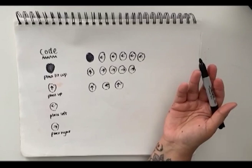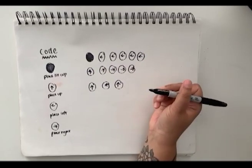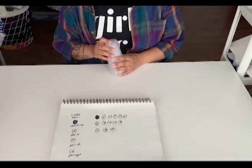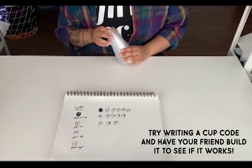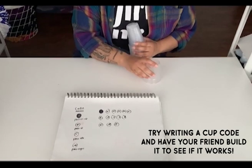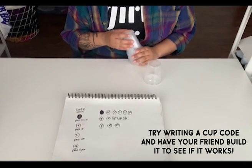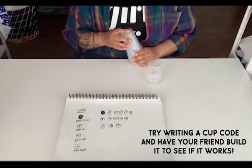So now we're going to build this code out with our actual cups. So I'm going to be placing the cups in the way that you see them in the code right here. So first we have one cup. We have one, two, three, four, five cups to the left.